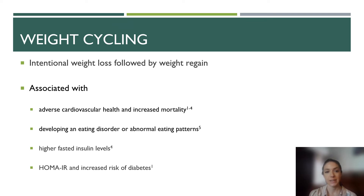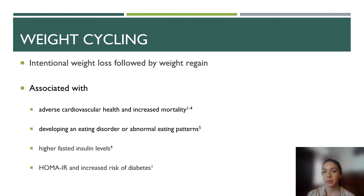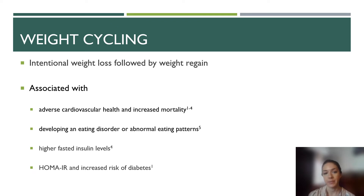I researched weight cycling in adults, which can be defined as intentional weight loss followed by weight regain. Weight cycling has been linked to adverse cardiovascular health and increased mortality in multiple studies, and it may increase the risk of developing an eating disorder or abnormal eating patterns. Weight cycling is also associated with an increased risk of diabetes, as it's shown to be associated with higher fasted insulin levels and a higher HOMA-IR. Therefore, the aim of my study was to examine if there was a relationship between a history of weight cycling and the development of insulin resistance.